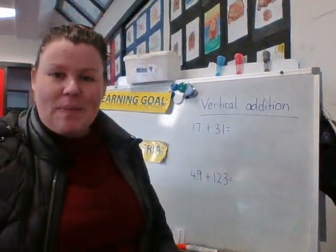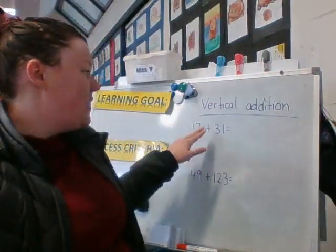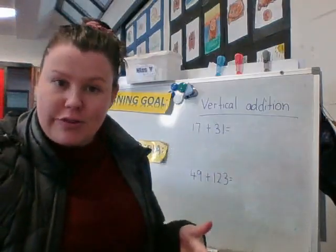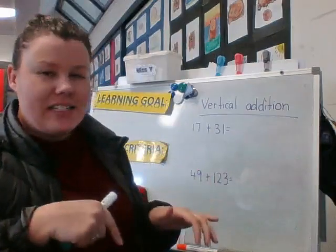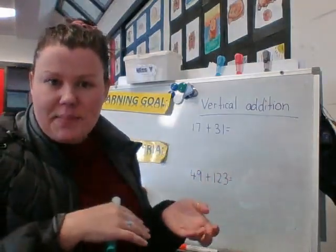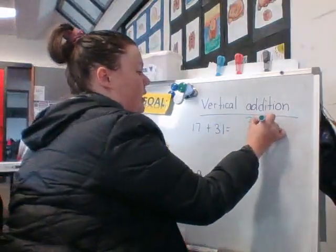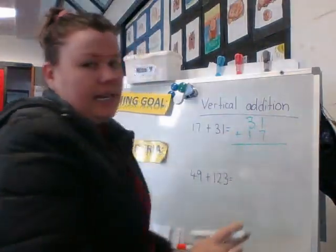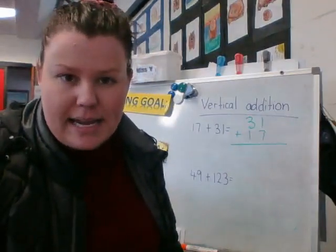Behind me here, I have two number sentences. We've got 17 plus 31. To solve things as a vertical algorithm, we need to stack them on top of one another. I always like to put the largest number on top just because when we get to our subtraction, that's something we need to remember as well. I'm going to write 31 plus 17. I like to put a little line underneath so I know that underneath that line is my answer. It's not more numbers that I'm adding together.